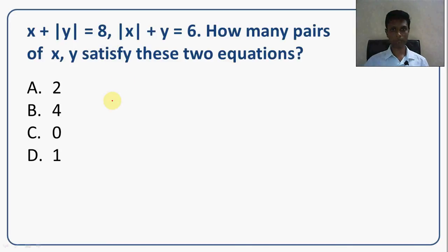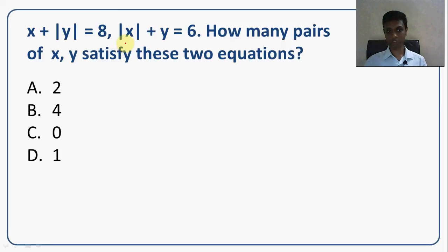It is a very interesting question on linear equations: x plus mod y is 8, mod x plus y is 6. How many pairs of x, y satisfy these two equations? It looks like a simple question, but having x plus mod y and mod x plus y makes it tricky — not that easy. The mod completely changes the dynamic of the question.